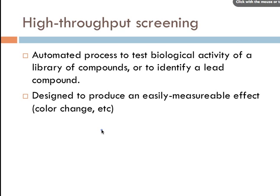High throughput screening is used for the libraries generated from either synthesis process. It is an automated method to test the biological activity of the library of compounds, or to identify a lead compound. It is designed to produce an easily measurable effect — such as a quick color change or a radioactive marker — so results can be rapidly scanned to identify compounds with biological activity. It can be applied at several points in the process, including identifying the lead compound at the end of phase zero.